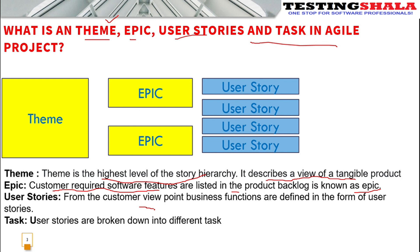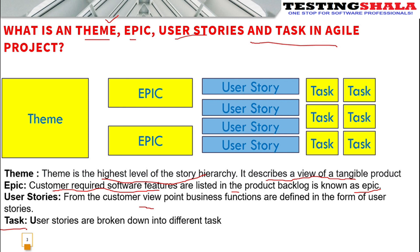The user stories are further broken down into multiple pieces called tasks, which can be easily measurable. Each task can be divided up to a maximum of eight or nine hours per day, so that it is easily measurable and trackable for the overall progress of the agile project. These are the four critical words used across agile projects.